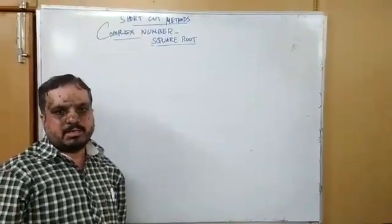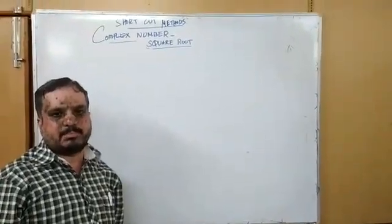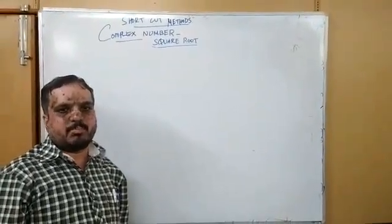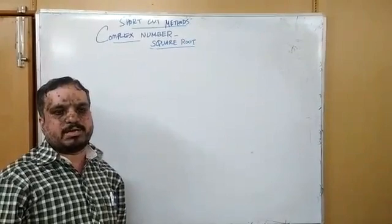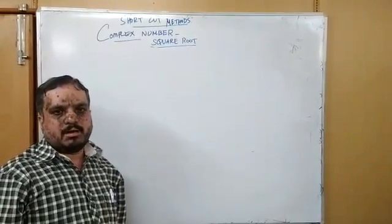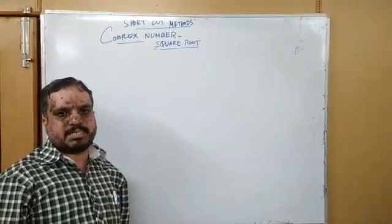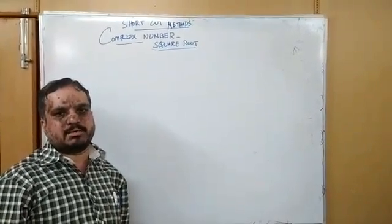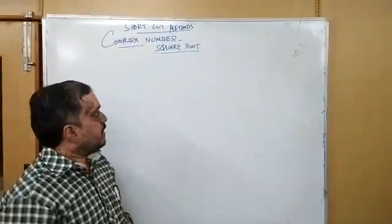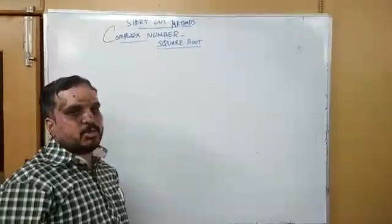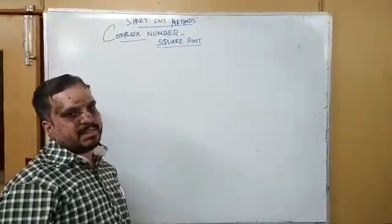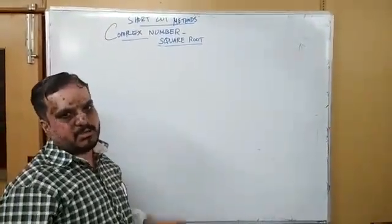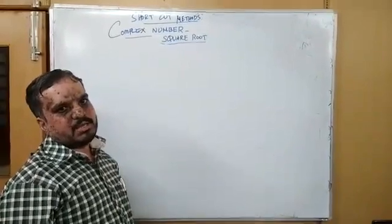I am Thiru Murugan, working as a PhD in Mathematics, Government School of Vailahor, Vilpuram district, which belongs to Tamil Nadu state. Today, I am going to give a shortcut method and approach for the square root of a complex number.